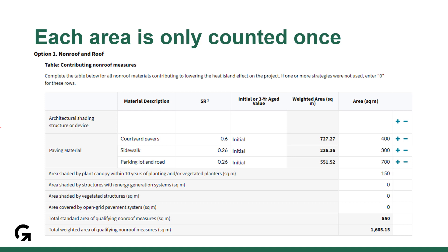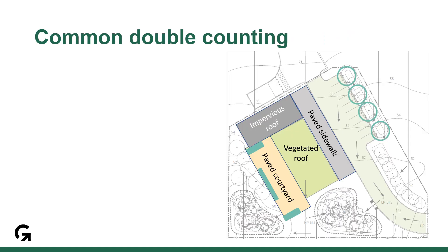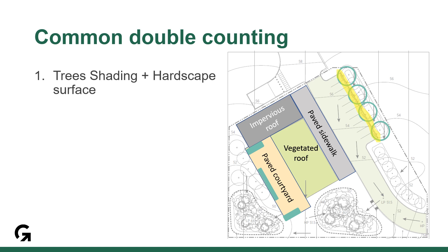Most of the entries are self-explanatory, but we sometimes find double counting of areas when you add up measures. As noted in the reference guide, each hardscape surface is only counted once, even if it is addressed in multiple strategies. The first common instance of double counting is when trees are shading hardscape — it's easy to count the solar reflectance of the whole parking lot and then also count the tree shade over that parking lot. The second instance is where planters sit on a courtyard: it is easy to claim the solar reflectance of the whole courtyard and then the area shaded by planter boxes on top of that.